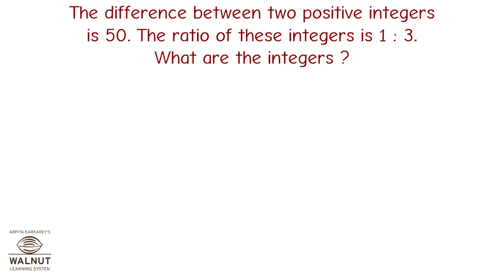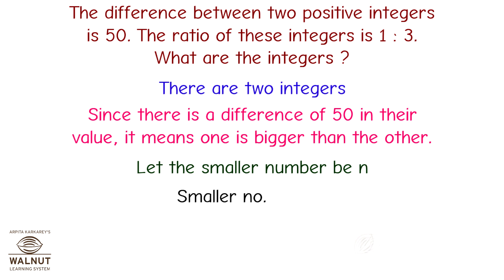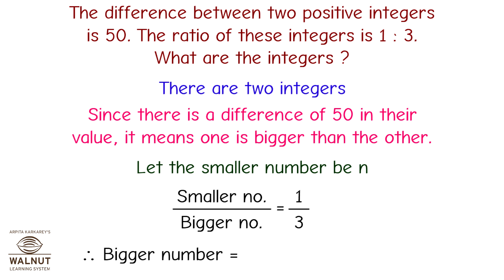Let's take a look at another word problem. The difference between two positive integers is 50. The ratio of these integers is 1 is to 3. Since there is a difference of 50, one is bigger than the other. Let the smaller number be n. Therefore the smaller number divided by the bigger number equals 1 upon 3, so the bigger number equals 3n.